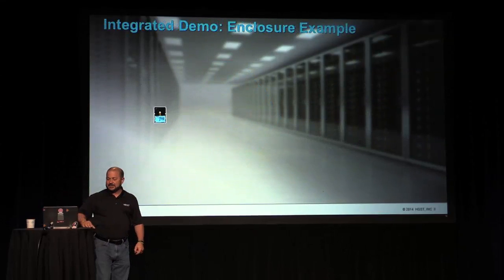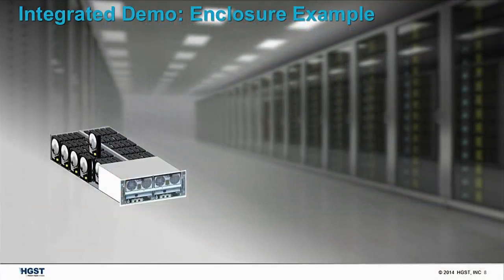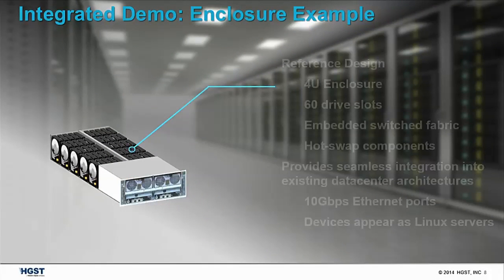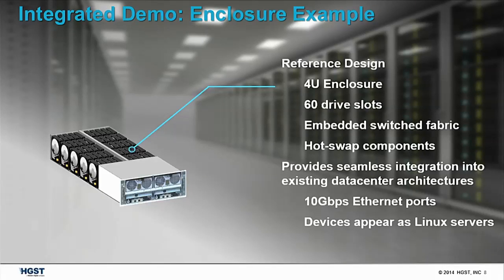The enclosure allows us to put 60 of these drives into a 4U enclosure. It has 10 gigabit Ethernet out the back — you can see eight 10-gig ports on that reference design enclosure at our booth. It connects up into your network, probably to your aggregation layer or even back to your core, because top-of-rack style connectivity is already built into the box. The enclosure appears as a Linux server, giving you the ability to intermix it with existing Intel-based nodes.